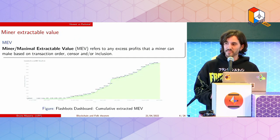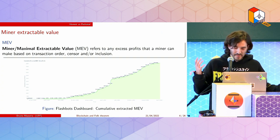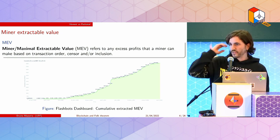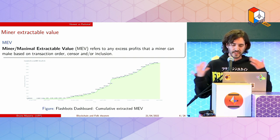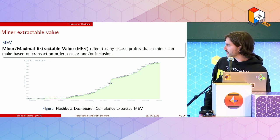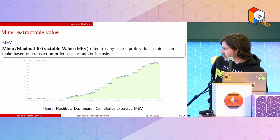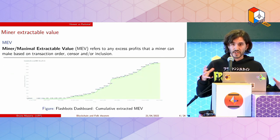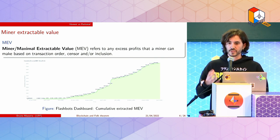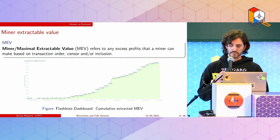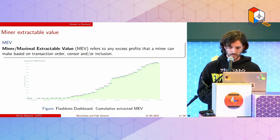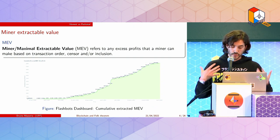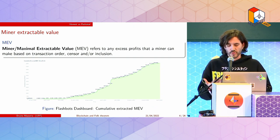Another example is MEV — maximal extractable value — which represents all the extra profits you can make by censoring, ordering, or including certain transactions. This is the cumulative MEV that has been extracted by flashbots. These are in general optimization problems that can be solved by a player just competing — for example, a miner sees and solves this problem. But to simulate this properly, we need to introduce tools from game theory.